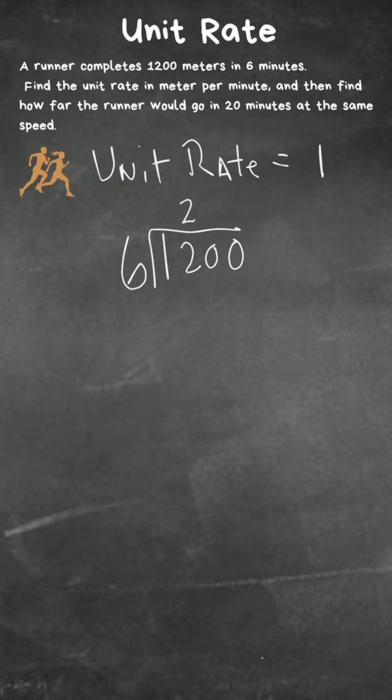12 two times. Two times six is 12. We have a zero - six goes into zero zero times, and then we have another zero. So the unit rate is 200 meters in one minute. Okay, so now to